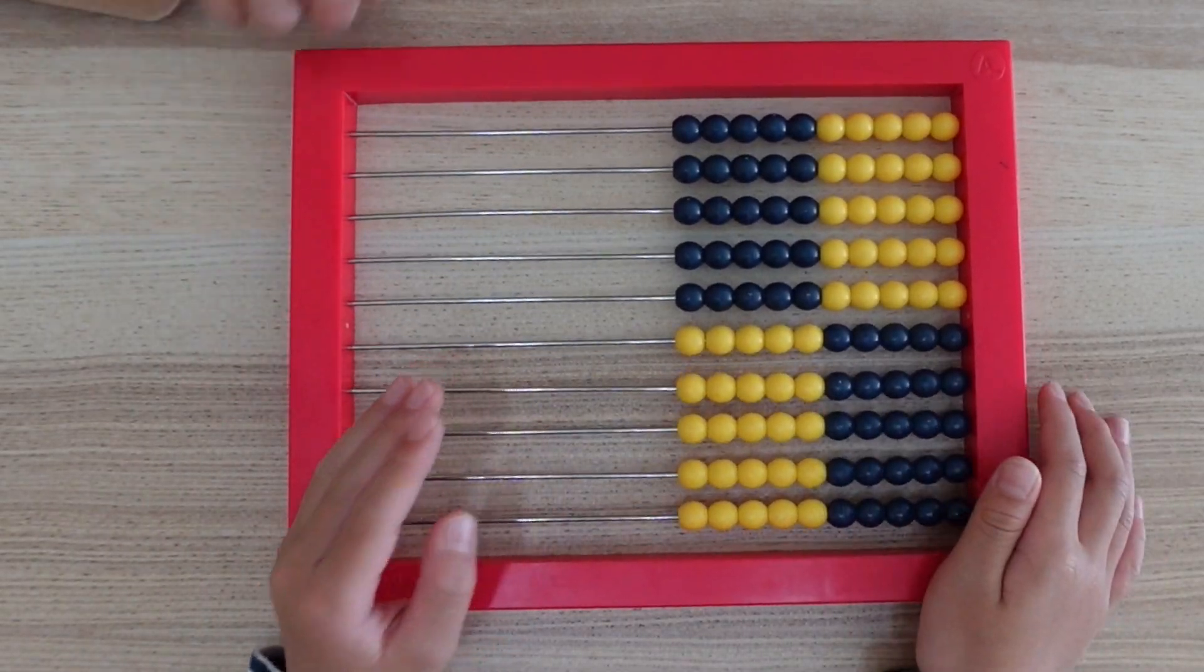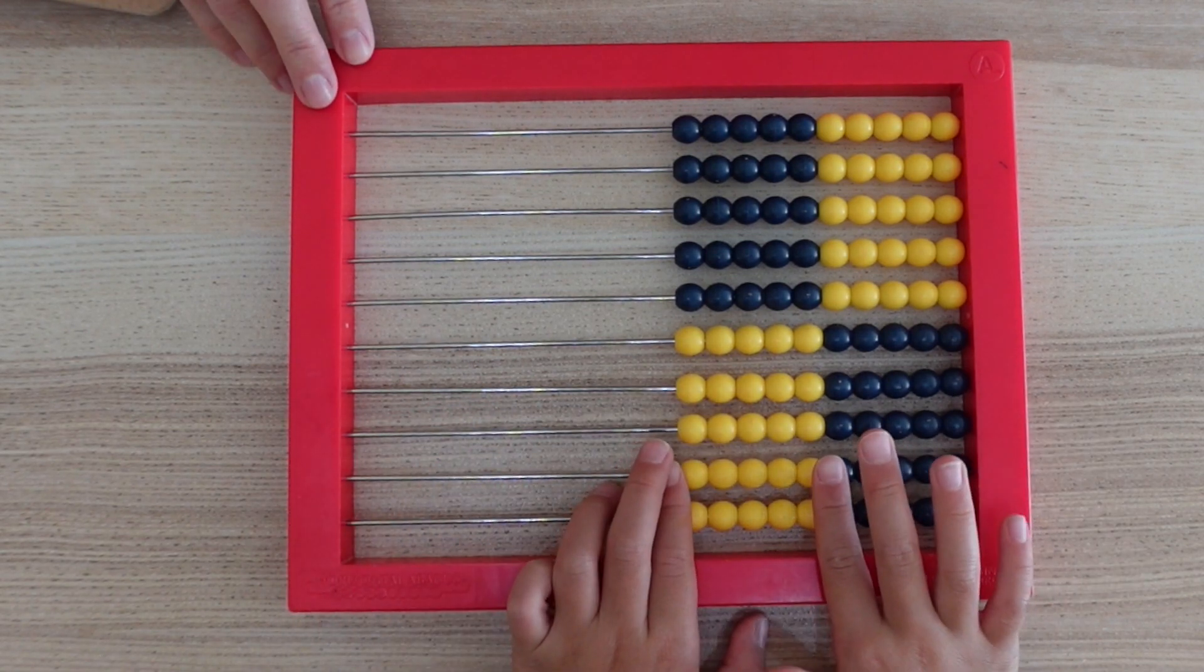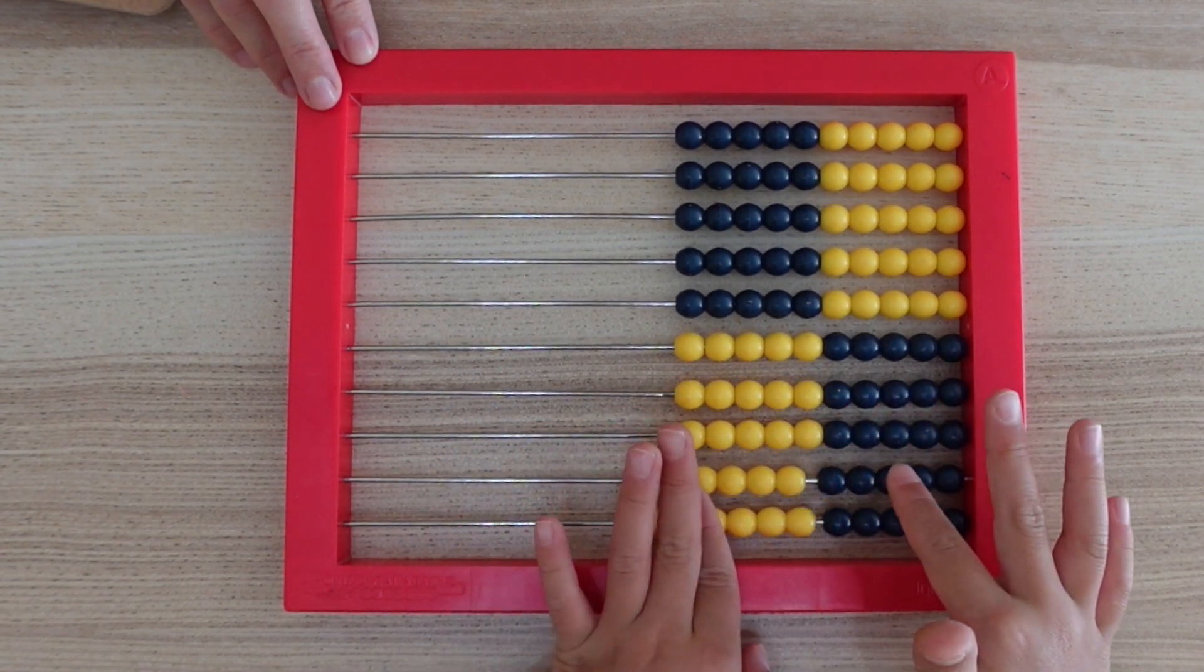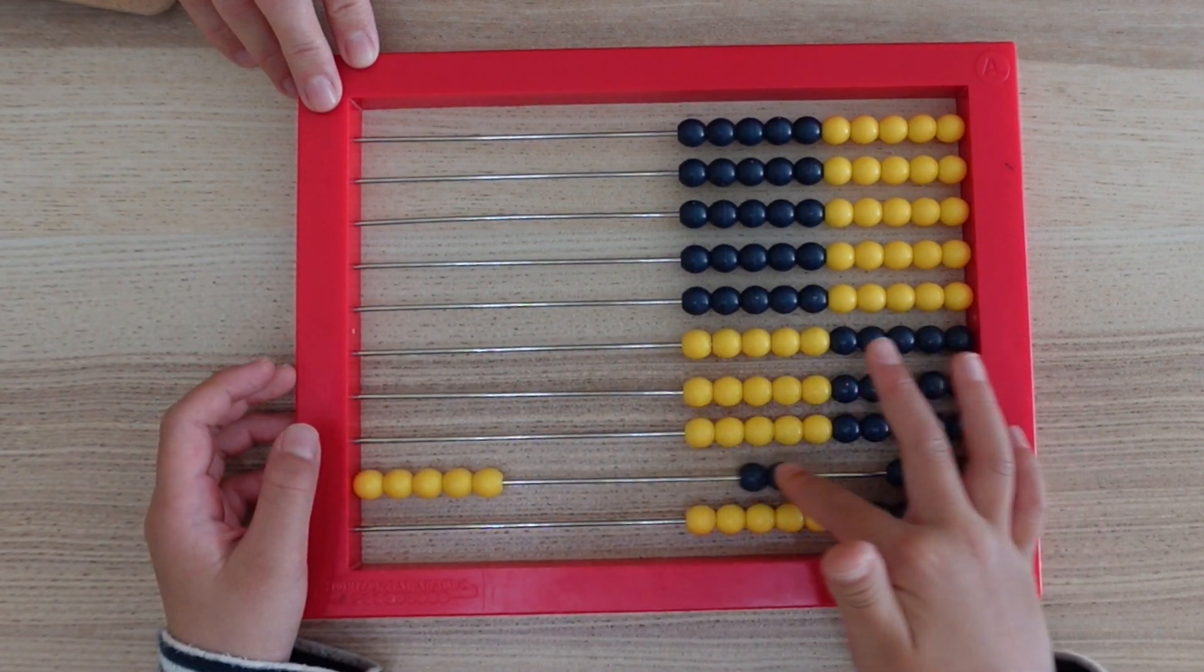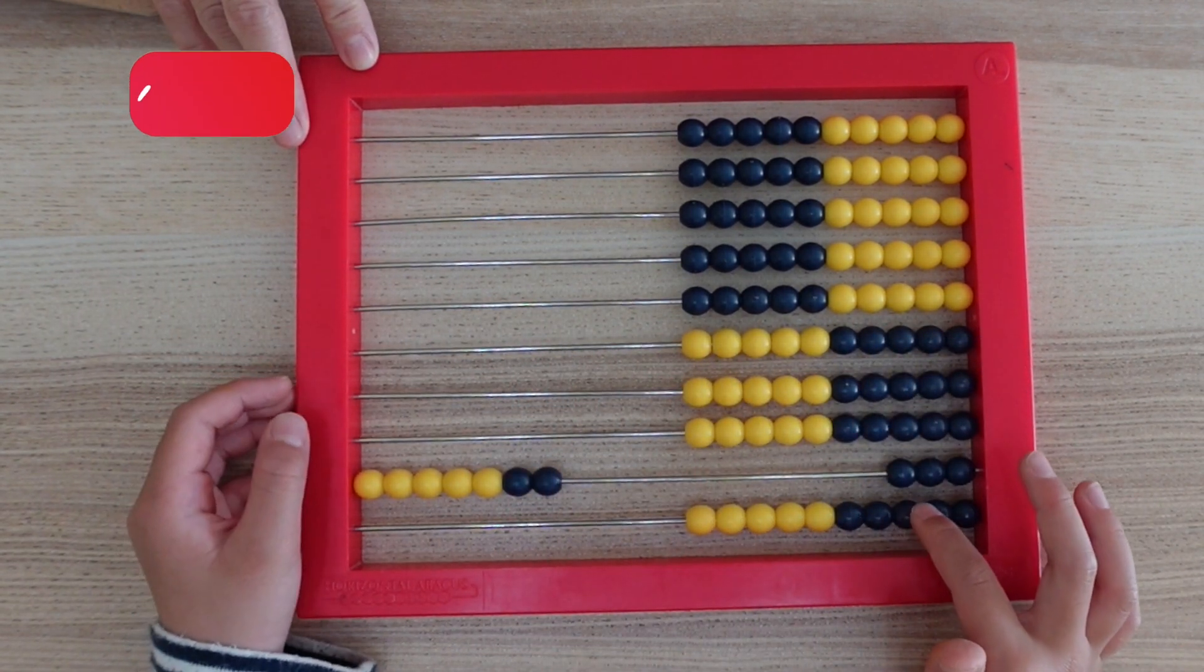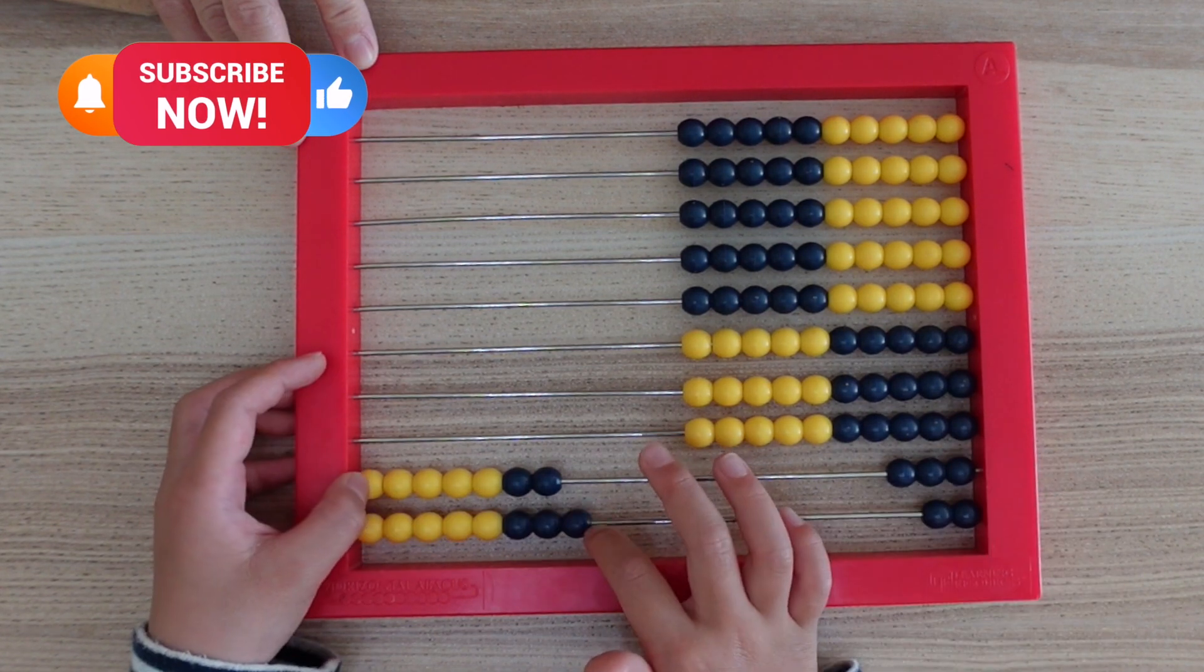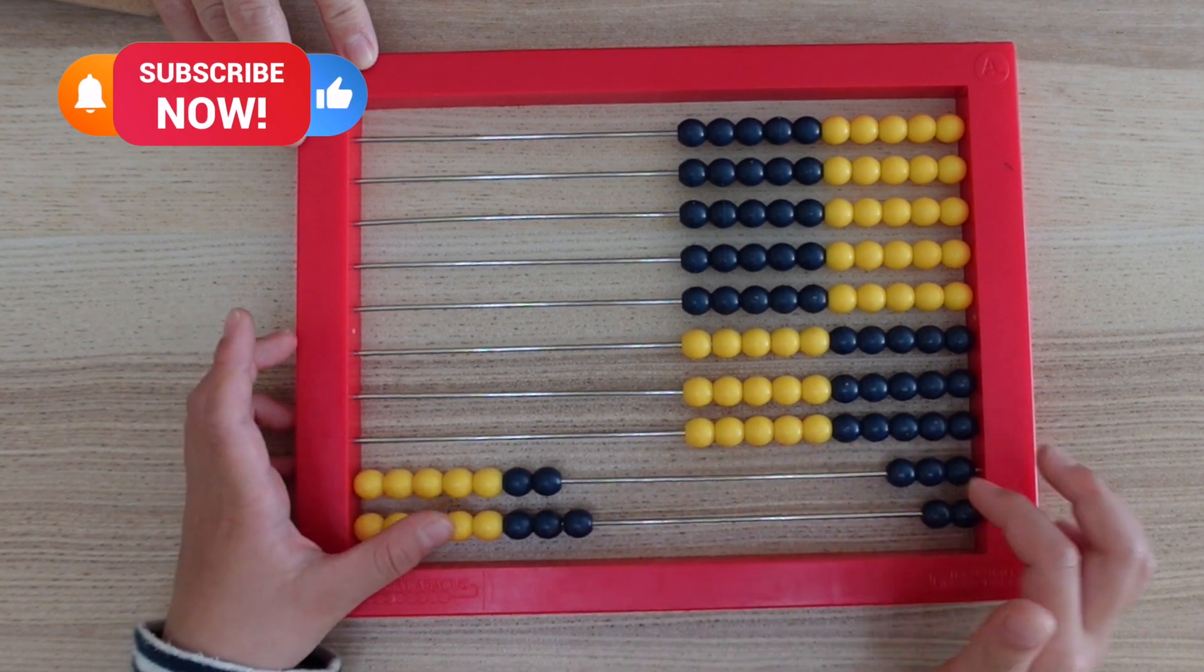First thing, if you want to do 7 times 8, you take 7 on the first bottom row and 8 on the last bottom row.